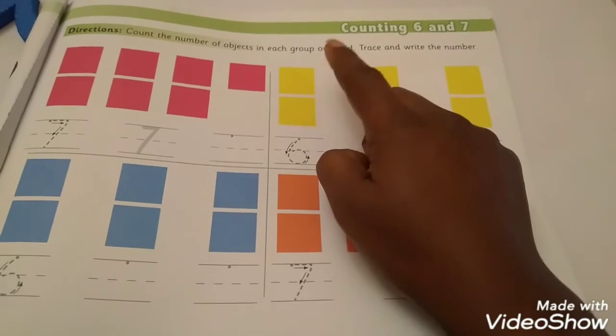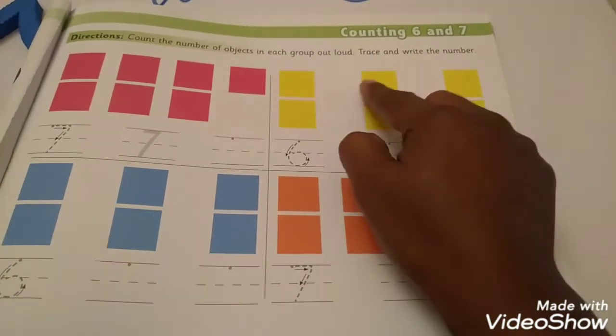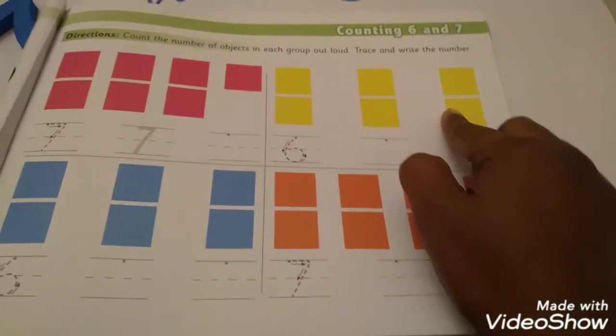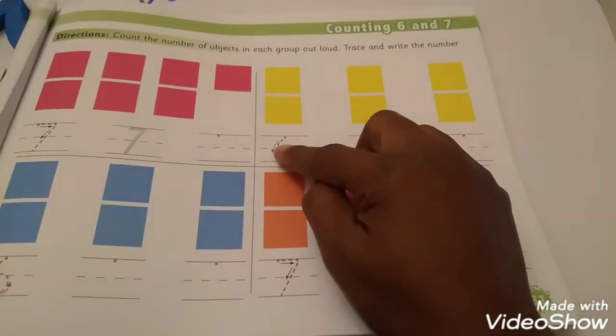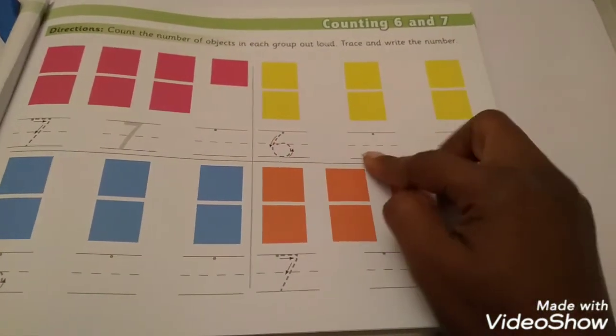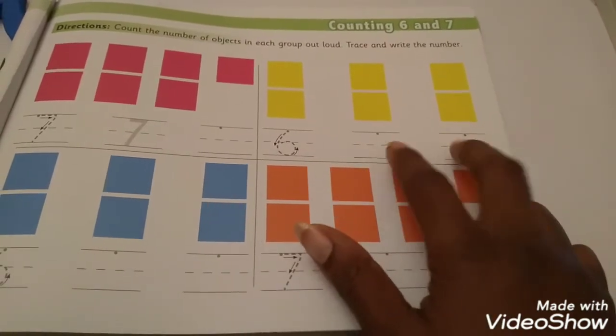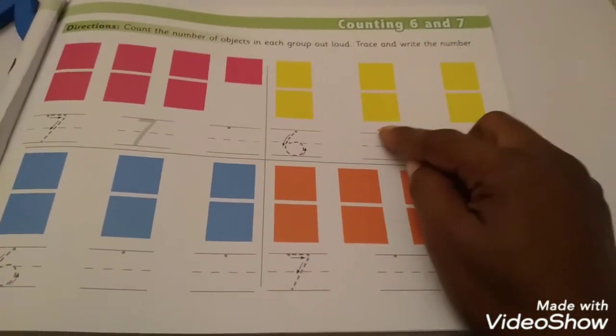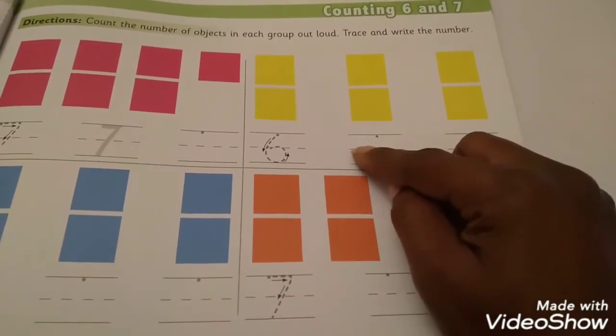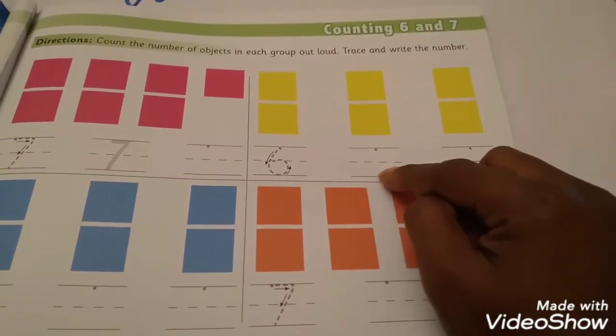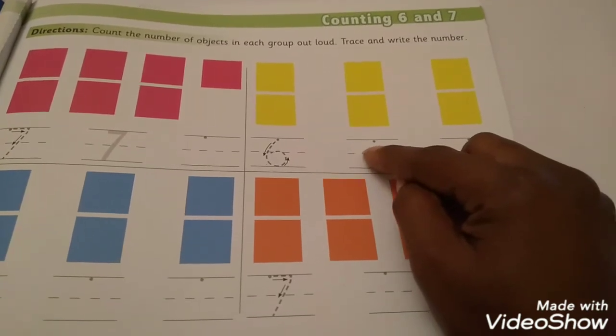You're going to do the same with this one. You're going to count the blocks out loud. Then you're going to trace the number 6. This time, you're going to just write the number 6. Now, remember, you start at the magic dot. You go around. And you're going to circle. And stop.